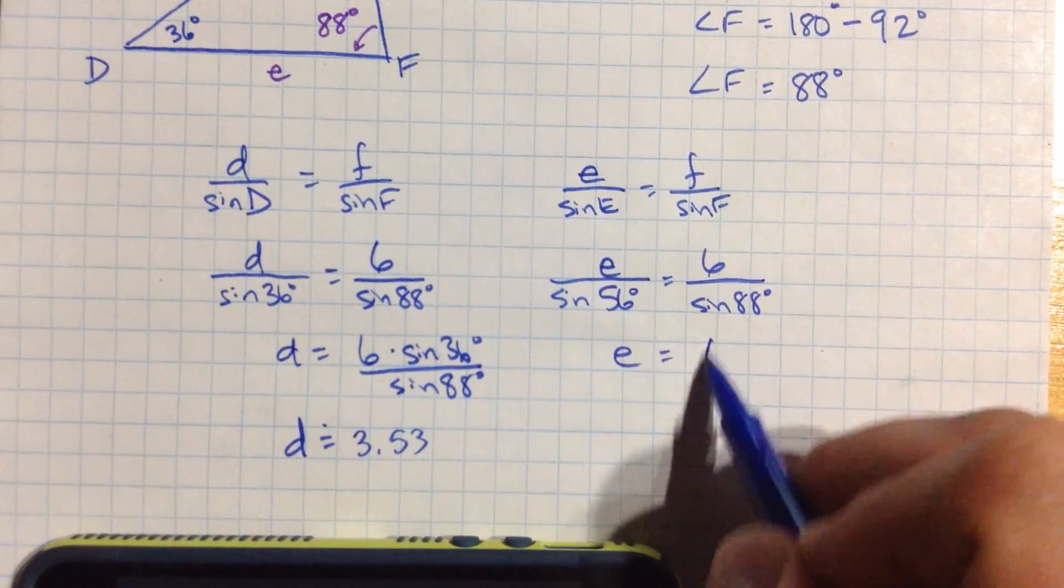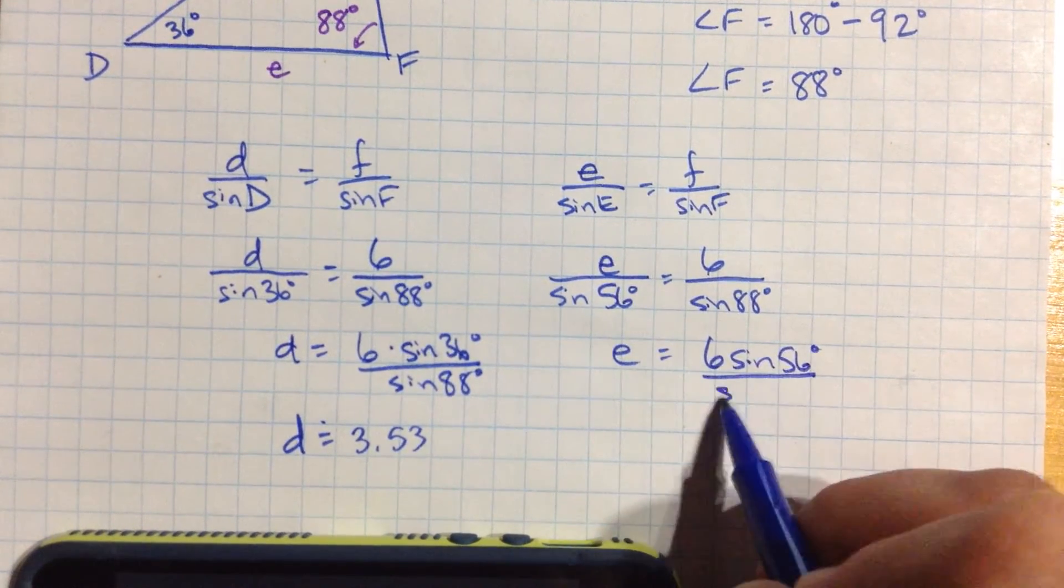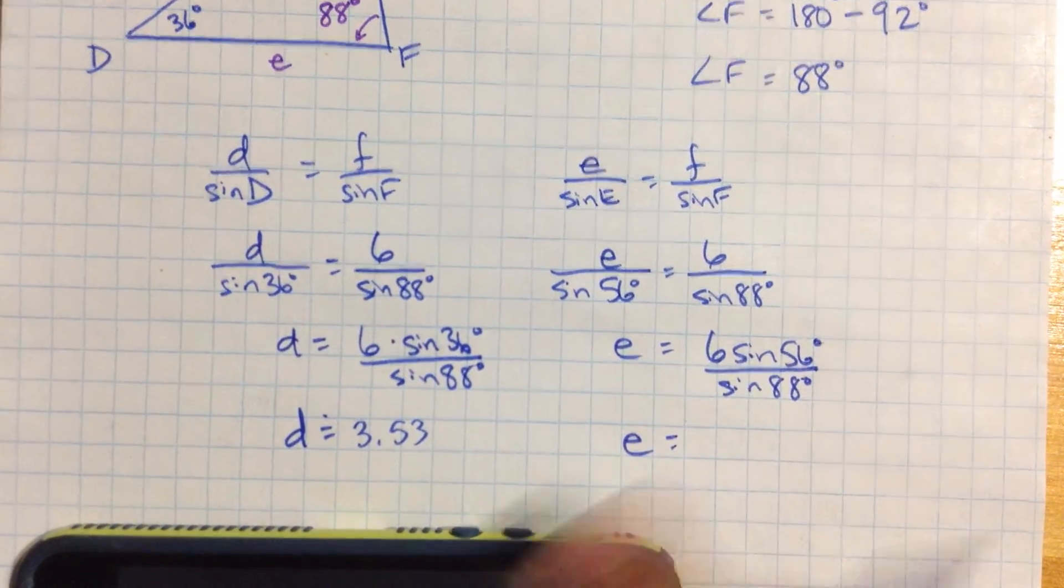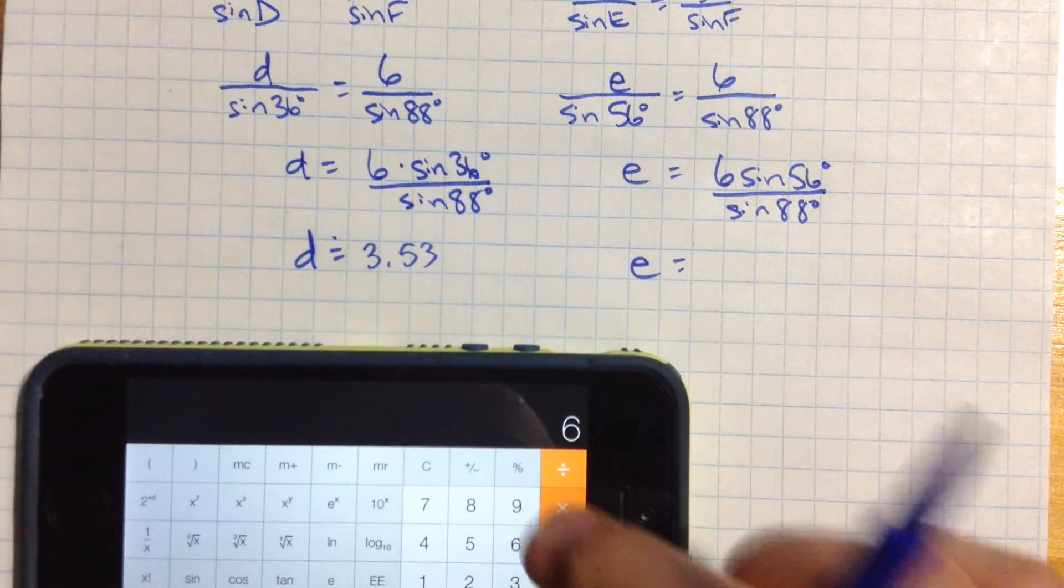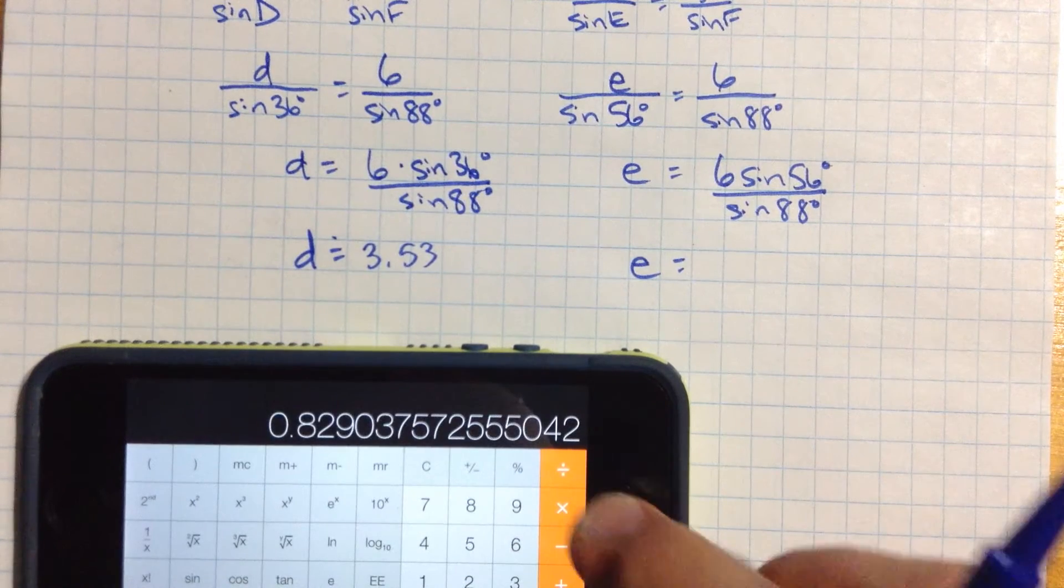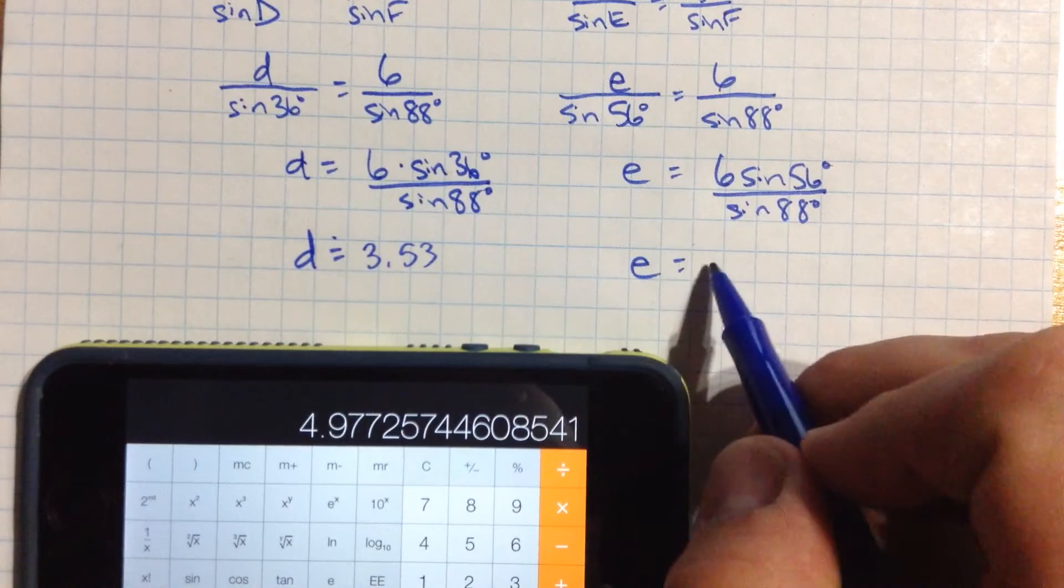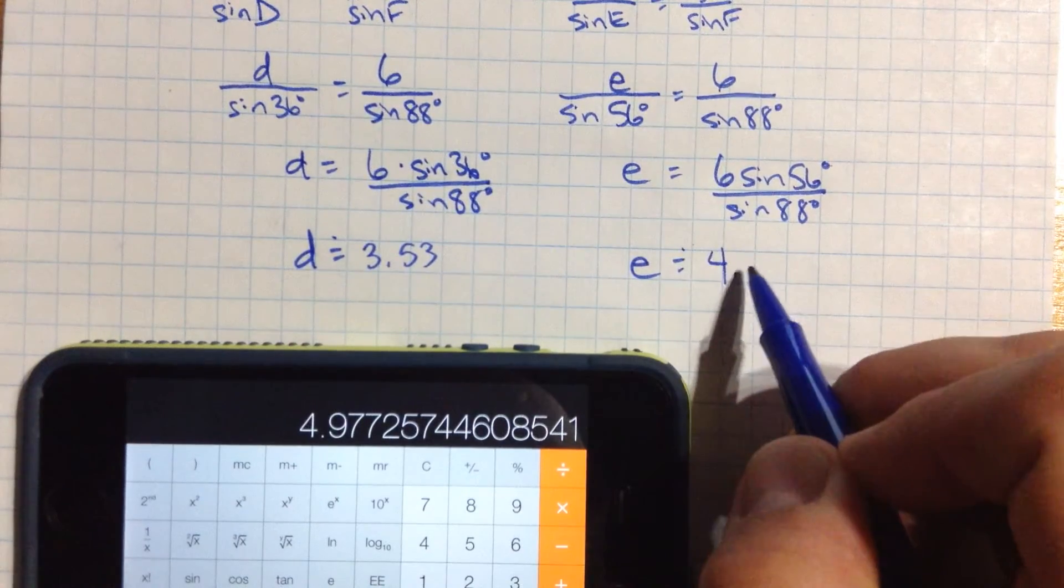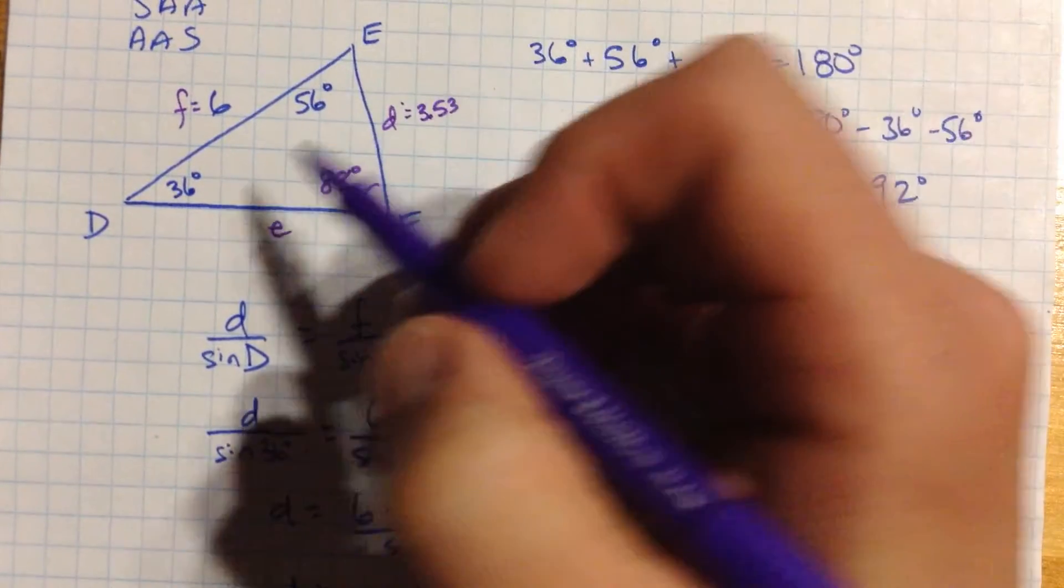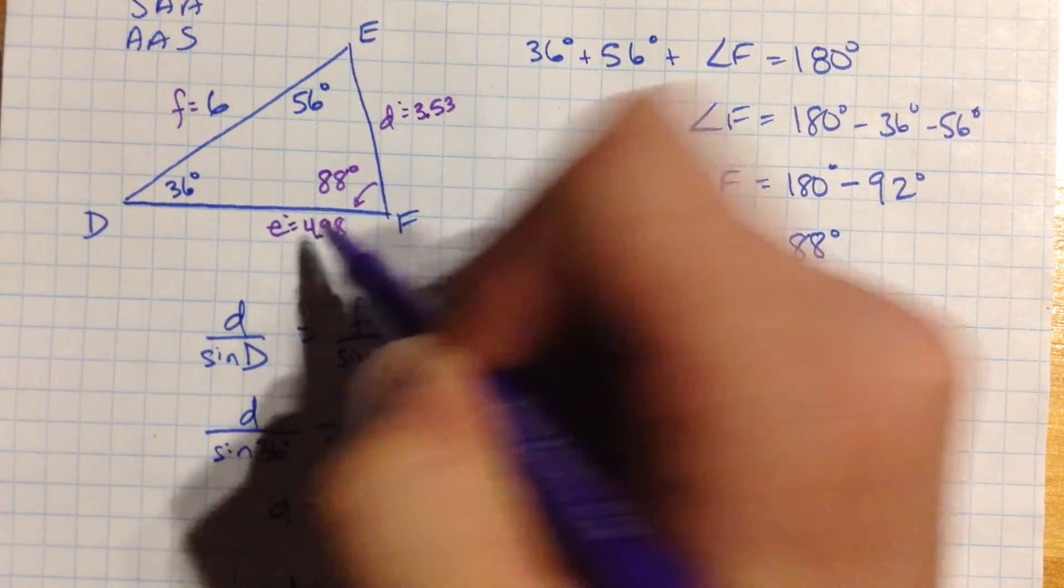Rearranging again, 6 times sine of 56 divided by sine of 88. 6 times 56 sine divided by 88 sine equals about 4.98. So that goes in our diagram right here. 4.98 units. So we've now solved a triangle where we knew two angles and one side.